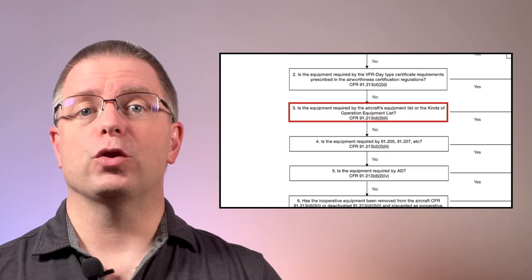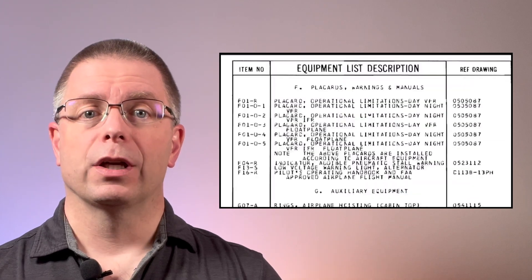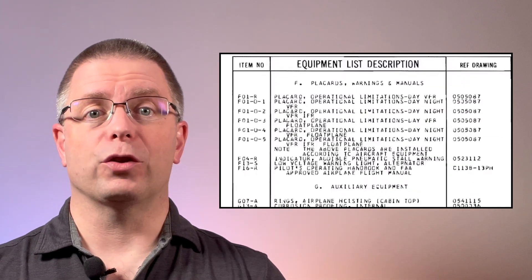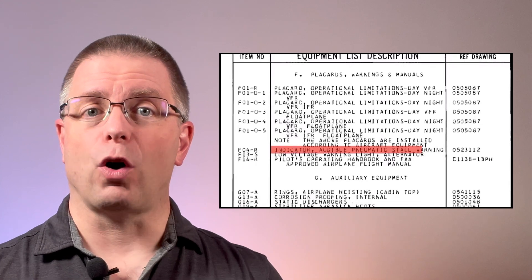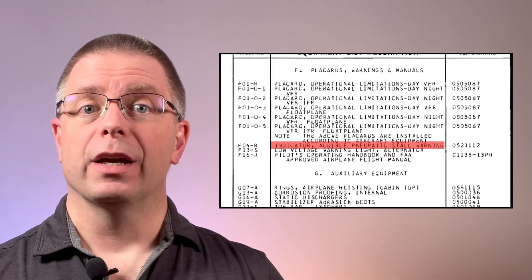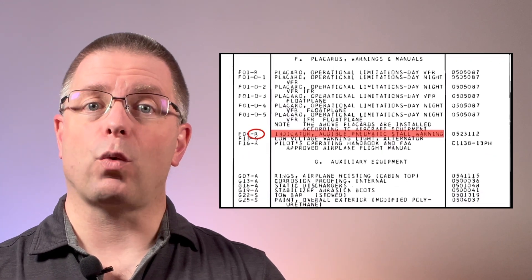For grins and giggles, let's continue the process. Third, the 172N doesn't have a KOEL. The equipment list for the 172N not only lists the pneumatic stall warning, but it prefixes it with a dash-R that indicates it is a required piece of equipment. So here's another indication that the stall warning needs to be fixed prior to flying.